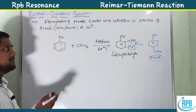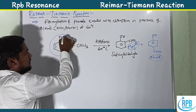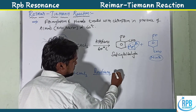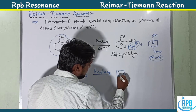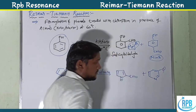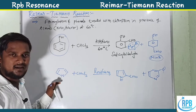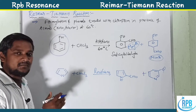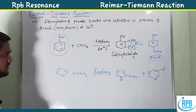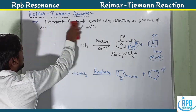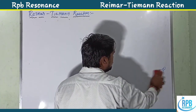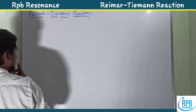Not only phenols, but some heterocyclic compounds also react with chloroform in the presence of KOH or NaOH, producing an NHCHO (formyl group insertion), or exceptionally some abnormal products. The complete mechanism for the heterocyclic Reimer-Tiemann reaction and its applications will be discussed in the next video. Today we will cover the complete mechanism of the Reimer-Tiemann reaction, which is very useful for JEE and NEET aspirants.